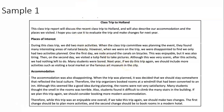Subheading: 'Accommodation.' The accommodation was also disappointing. When the trip was planned it was decided we should stay somewhere that reflected local culture, so the trip organizers booked rooms at a windmill that had been converted to an inn. Although it seemed like a good idea during planning, the rooms were not very satisfactory — many students thought the smell was terrible, and students found it difficult to climb the many stairs. If we plan this trip again, we should consider booking more modern accommodation. Again, two things discussed that didn't go well, plus suggestions. Conclusion: 'Therefore, while this trip was an enjoyable one overall, if we take this trip again we should make two changes: plan more activities and book rooms in a modern hotel.' Pause and consider what is good about this report and what you would improve.